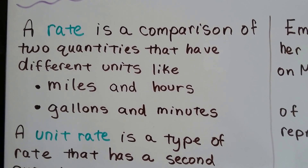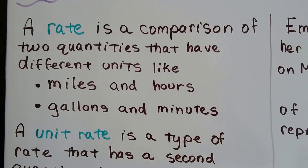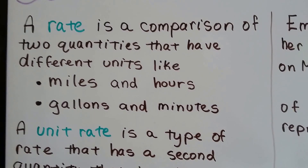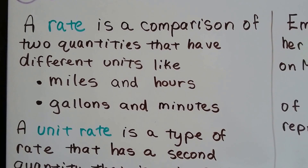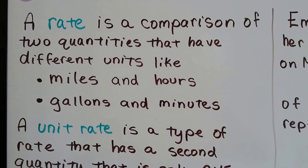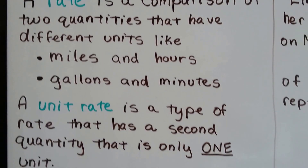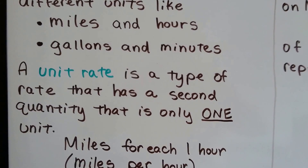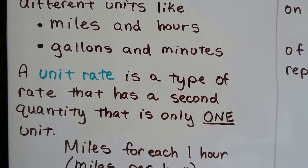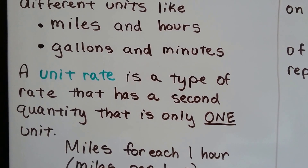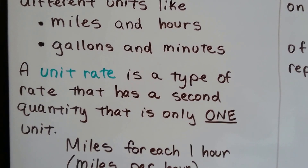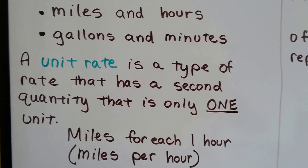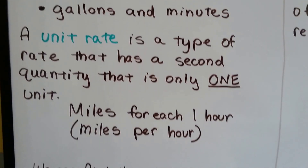A rate is a comparison of two quantities that have different units, like miles and hours, or gallons and minutes. A unit rate is a type of rate that has a second quantity that is only one unit, like miles per hour.